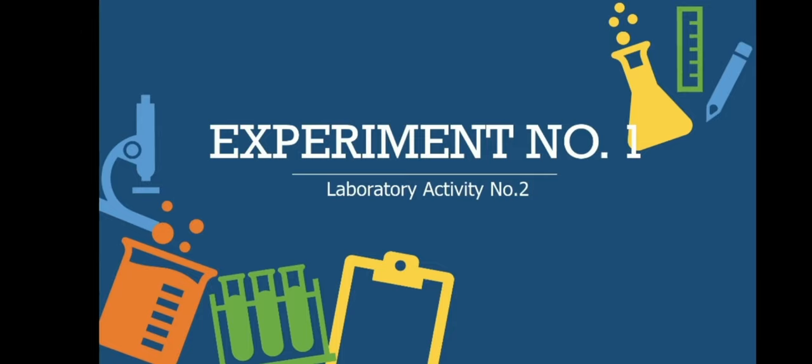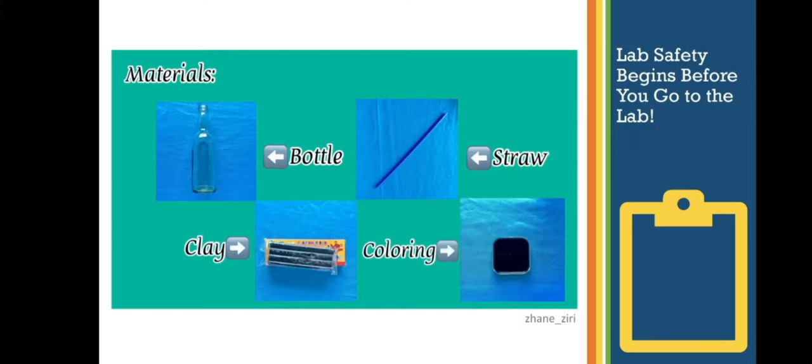Okay, now let's first discuss our past experiment, experiment number one, laboratory activity number two, the miniature fountain. We used a bottle, a straw, a clay, and a coloring agent.